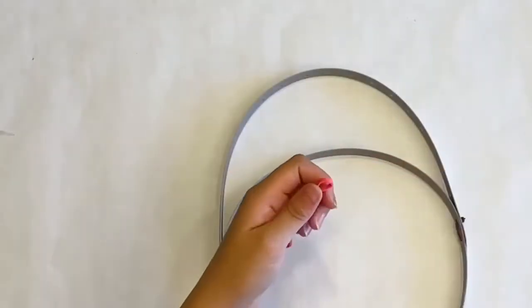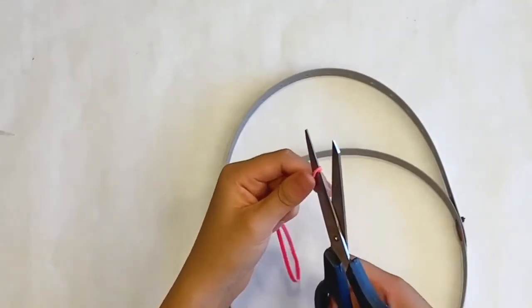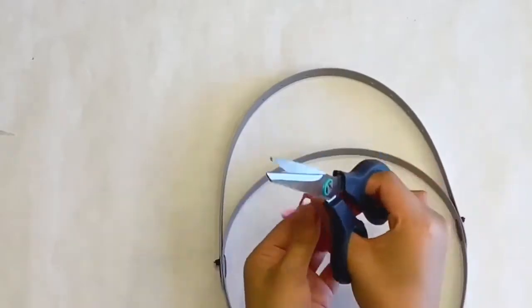Now I have a rounded rubber band here and I am just going to cut it in half because that is the length we need.